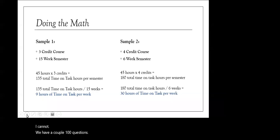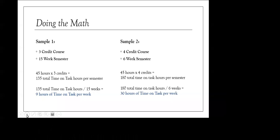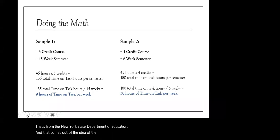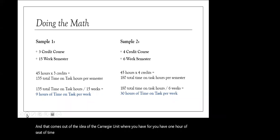Another question: where does the one-to-45 association come from? That's from the New York State Department of Education, and it comes out of the idea of the Carnegie unit — where you have one hour of seated time per credit, plus two hours of work outside of class. When you multiply that across a 15-week semester, you end up with those 45 hours.